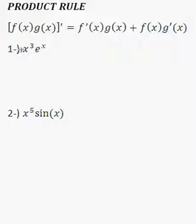So f prime of x, I'm just going to use the power rule. I'm going to bring the exponent down, subtract it by 1, so the derivative of x cubed will be just 3x squared, and g of x is just going to remain the same as e to the power of x. So I've already done this part, f prime of x times g of x for this small equation.